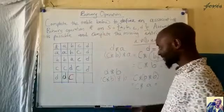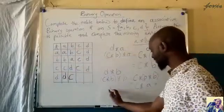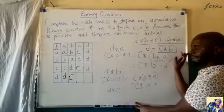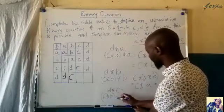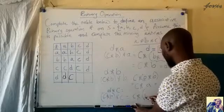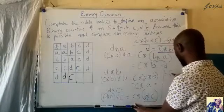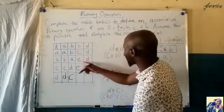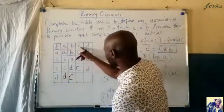We come to D operate C. Replacing D with its equivalent: C operate B, then operate C. Associating the last two, this equals C operate (B operate C). B operate C is C. So this becomes C operate C. C operate C gives C. So D operate C equals C.